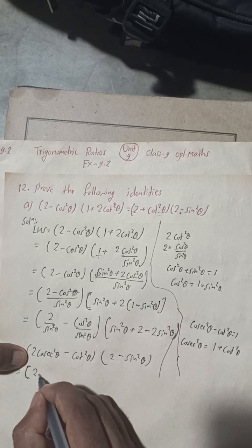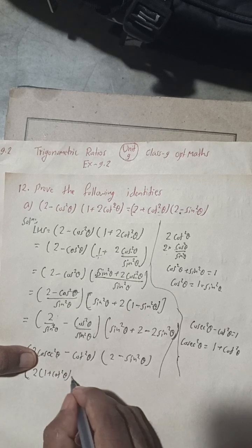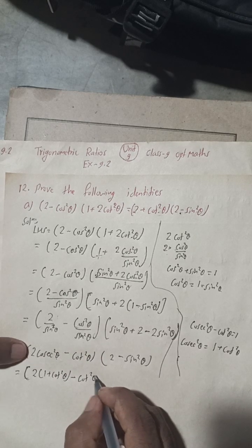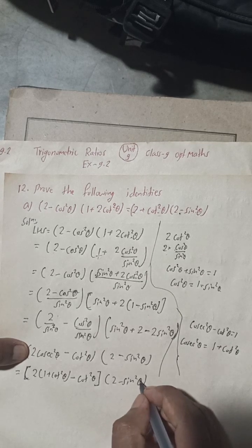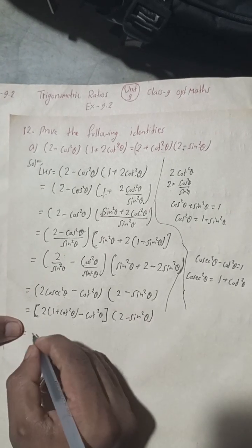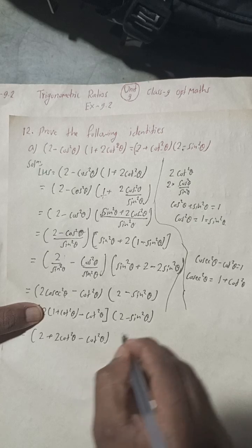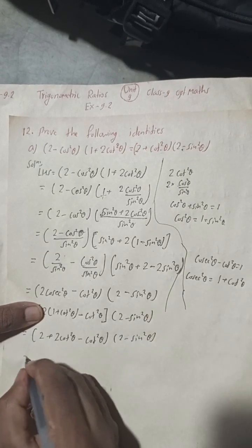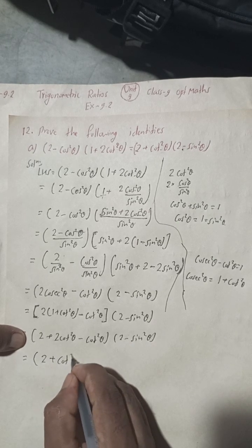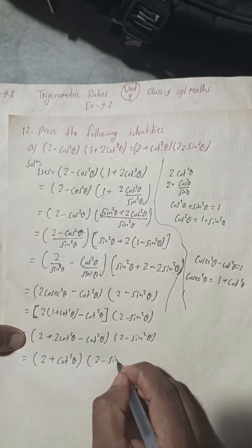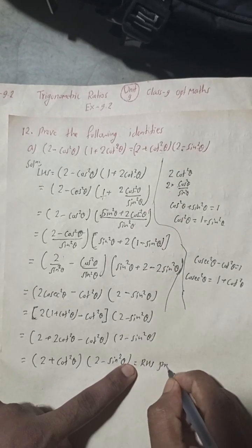Using cosec²θ = 1 + cot²θ: 2 × (1 + cot²θ) - cot²θ = 2 + 2cot²θ - cot²θ = 2 + cot²θ. So this part gives (2 + cot²θ), and combined with (2 - sin²θ), we get (2 + cot²θ)(2 - sin²θ) = RHS. Proved.